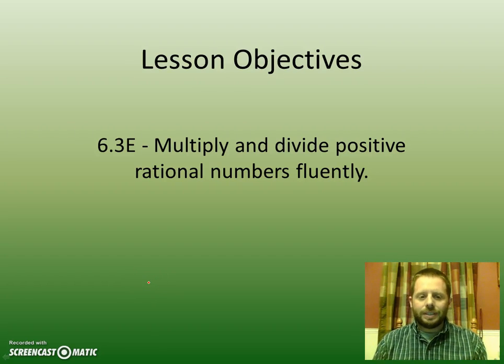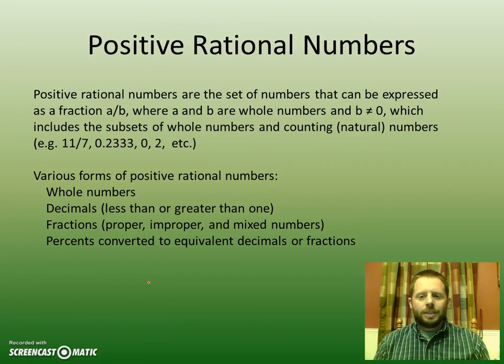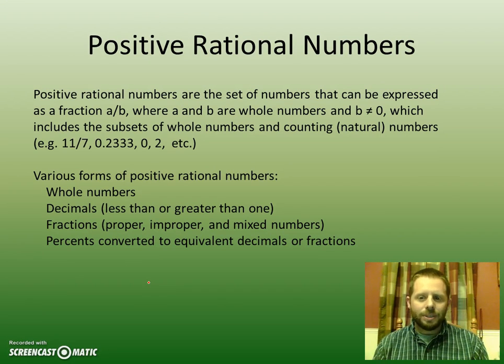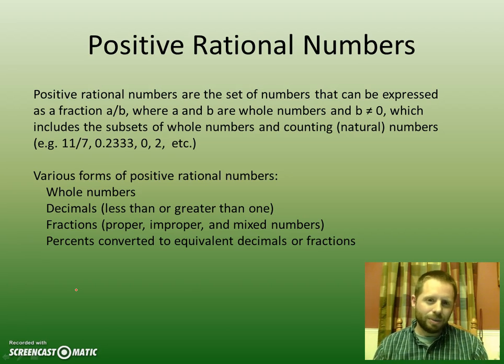Lesson Objective 6.3e states multiply and divide positive rational numbers fluently. Positive rational numbers are defined as the set of numbers that can be expressed as a fraction a over b, where a and b are whole numbers and b cannot equal zero. In basic terms, a positive rational number is any number that can be made into a fraction where you have both a positive number in the numerator and a positive number in the denominator, as long as you don't let the denominator equal zero because we can't have a fraction with a zero in the denominator.